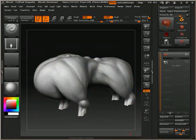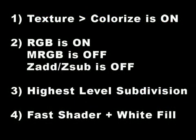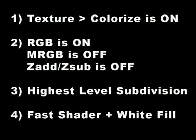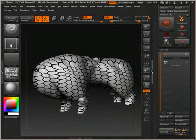Now that the two meshes match, we need to set things up for the texturing. First, make sure that Colorize is set in the texture menu. Then, turn off MRGB, ZAdd and ZSub. Set the material to the fast shader and fill both objects with white. When you have done all that, select your subdivided low resolution mesh and import the image you plan to transfer as a texture.